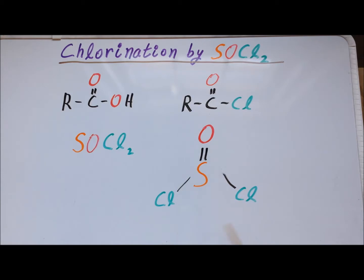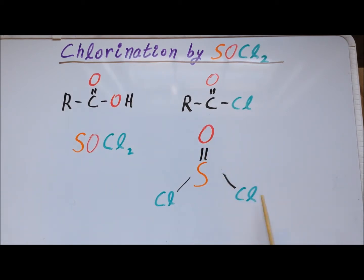Thionyl chloride has a planar structure with sp2 hybridization on the central sulfur atom. Sulfur is a relatively large, electropositive atom directly attached to three electronegative elements: one oxygen, the second most electronegative element, and two chlorine atoms, the third most electronegative element. Because of this, sulfur becomes rather electropositive and is therefore prone to nucleophilic attack.